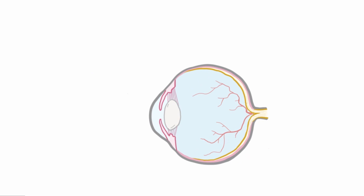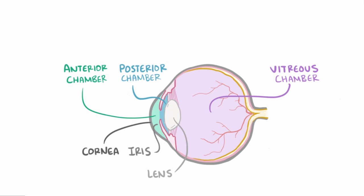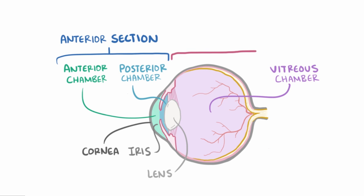Taking a closer look at this cross-section of the eye, you can see that it's split up into different chambers. The anterior chamber includes the area from the cornea to the iris. The posterior chamber is this really narrow space between the iris and the lens. And then this larger vitreous chamber includes the space between the lens and the back of the eye. Both the anterior and posterior chambers are located within the anterior section of the eye, while the vitreous chamber is part of the posterior section of the eye.